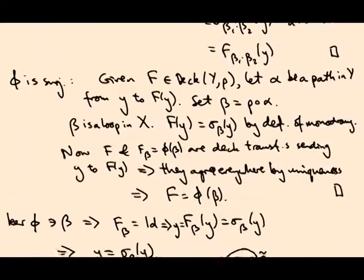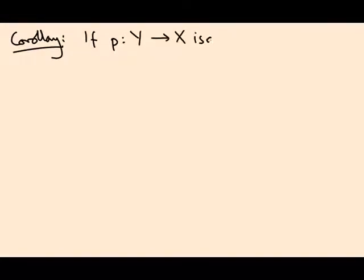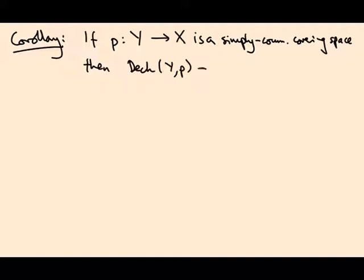So we've checked this map is a homomorphism, surjective, and its kernel is H. Here's a nice corollary: If Y is a simply connected covering space, then the deck group is isomorphic to π₁(X). The whole of π₁(X) acts via deck transformations.